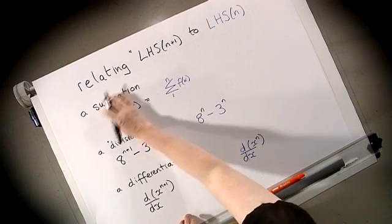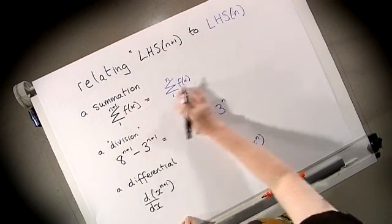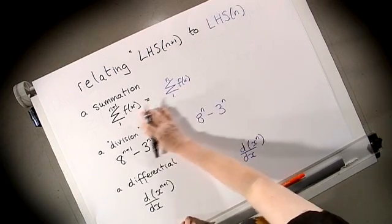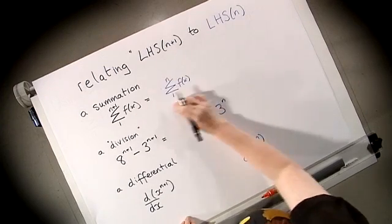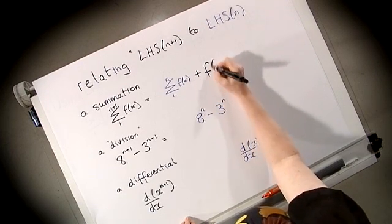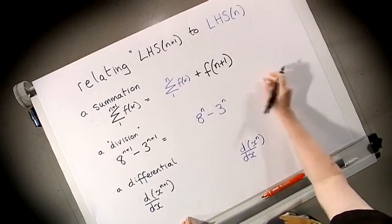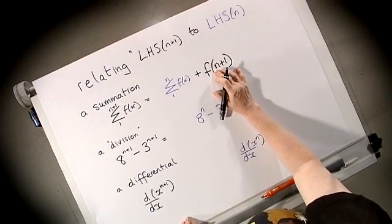This is when our left hand side is a summation. The relationship is then easy. We simply take our left hand side with N and we add the extra term we get when we add the N+1 in. We can now do the ordinary arithmetic on here.